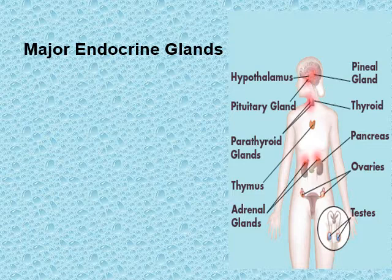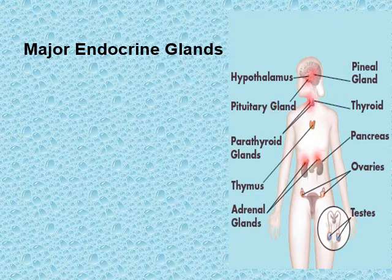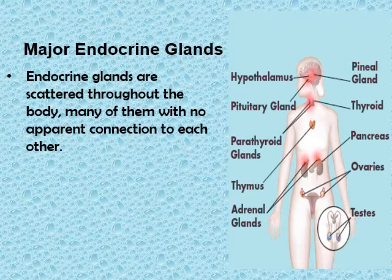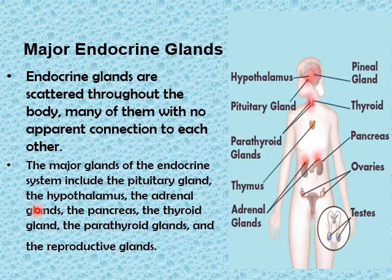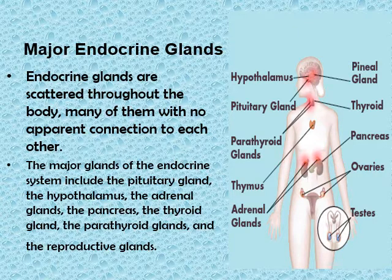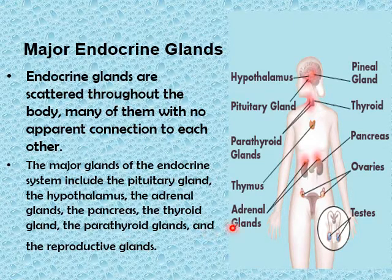Let's start with the major human endocrine glands. As you can see on the diagram, the major human endocrine glands are scattered and distributed throughout the body, many of them with no apparent connection to each other. They include the pituitary gland and hypothalamus, both located in the brain; the adrenal glands on top of each kidney; the pancreas in the thorax; and the thyroid and parathyroid glands in the neck region.